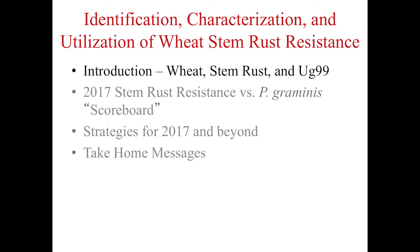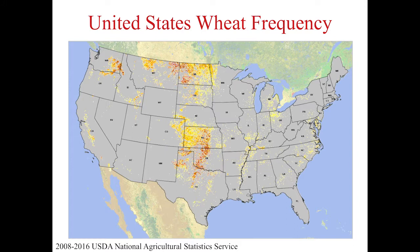Even after most of the barberry eradication took place, there were still some pretty big epidemics. A couple of races emerged: in 1935 it was really race 56, MCCFC, that caused the epidemic, and then in the 1950s there was a different race. A number of wheat varieties grown across the Great Plains had different stem rust resistance genes. Races adapted to those deployed varieties and broke those resistance genes down, causing an epidemic. Then new varieties came out with new genes, but the pathogen evolved to overcome those resistance genes as well.